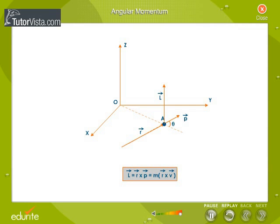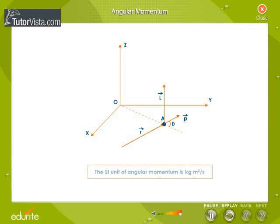Vector r is the position vector of the particle with respect to O. The SI unit of angular momentum is the kilogram meter squared per second.